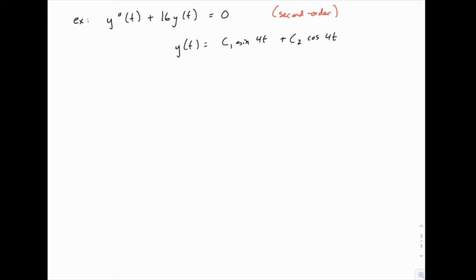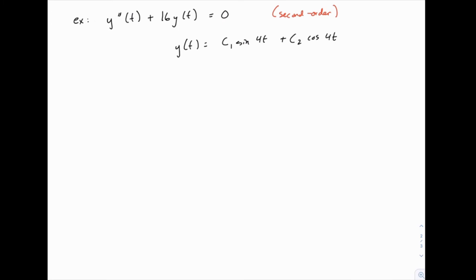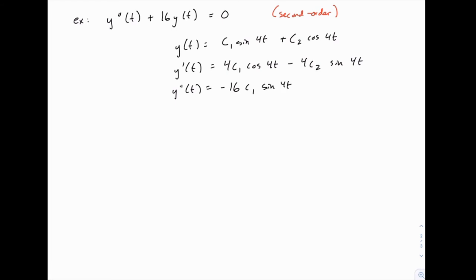To check this proposed solution, we will substitute for y all of this, and for y double prime we'll find the second derivative. So we need to do two derivatives. For y prime: the derivative of sine of 4t gives 4 times cosine of 4t, and the derivative of cosine of 4t gives negative 4 times sine of 4t. For the second derivative: the derivative of cosine gives another negative 4, so the 4 already present times the next 4 gives negative 16c1 sine of 4t. Similarly, the second part gives negative 16c2 cosine of 4t.